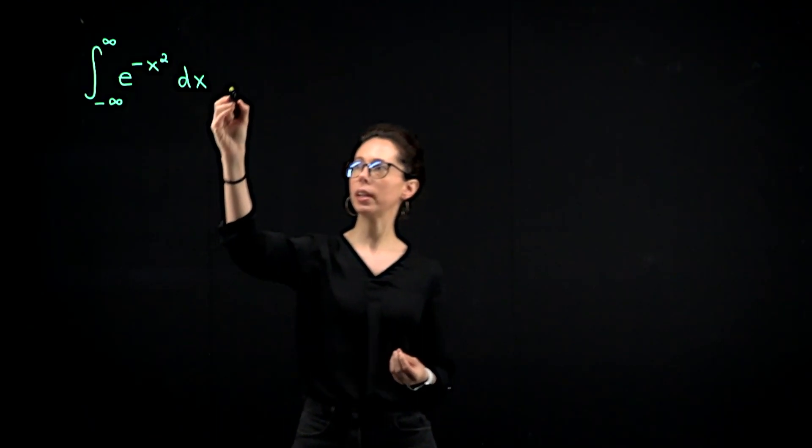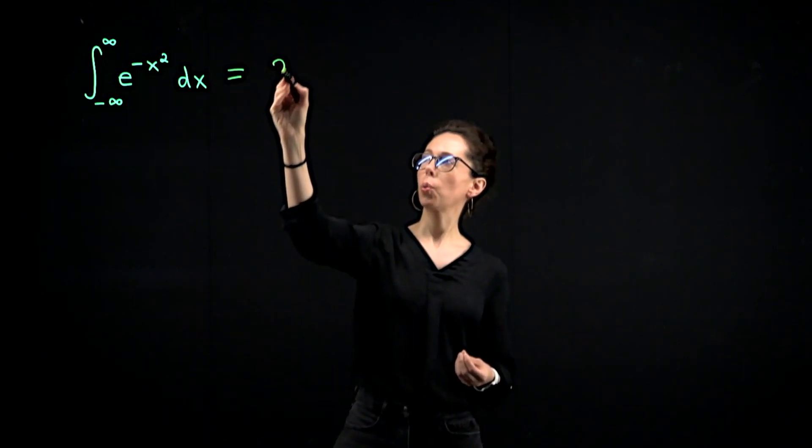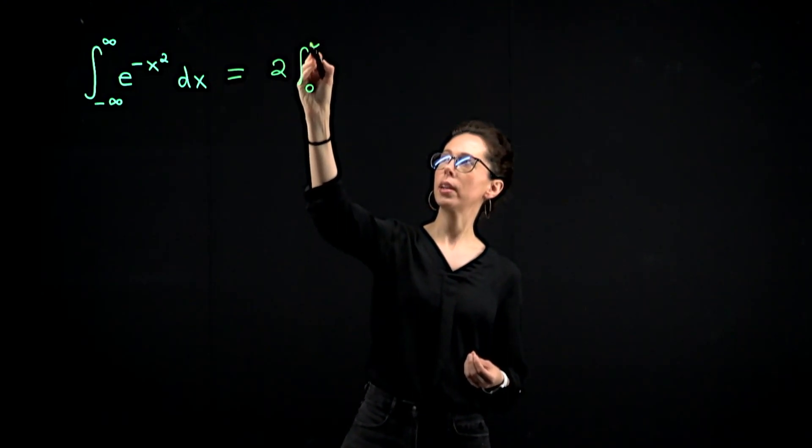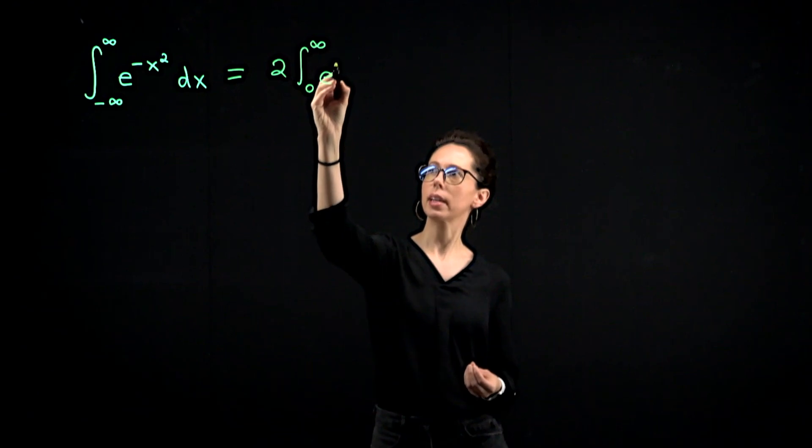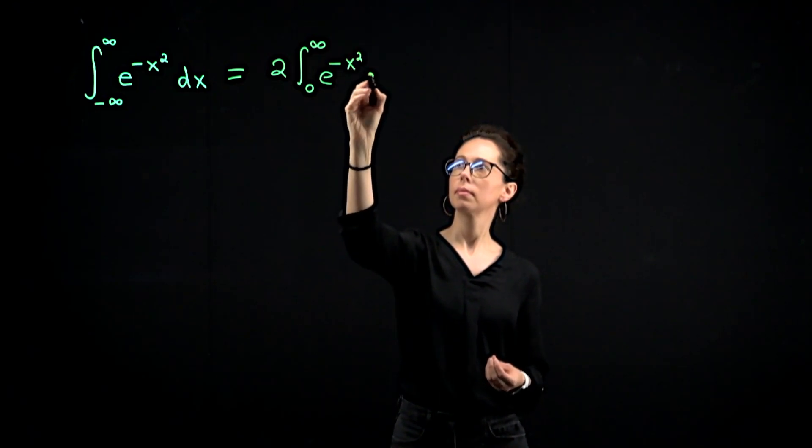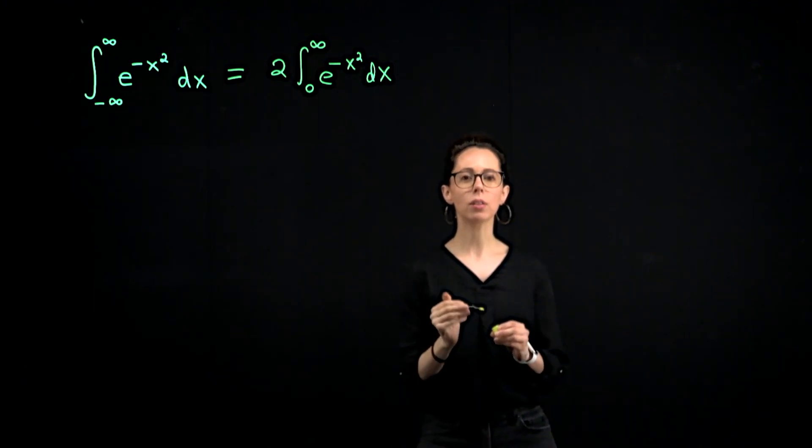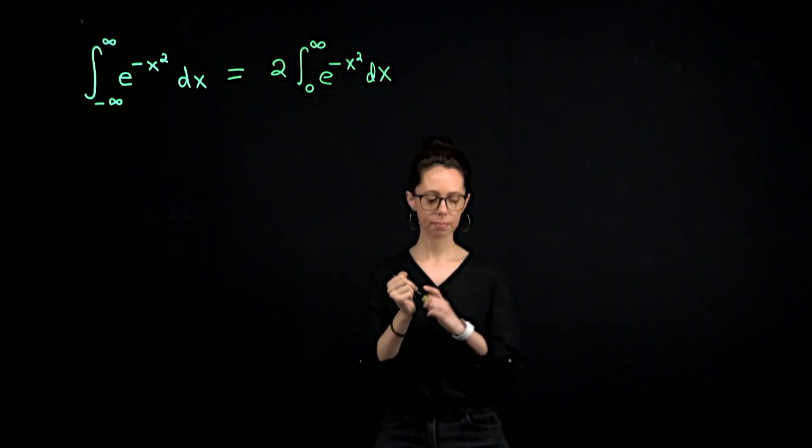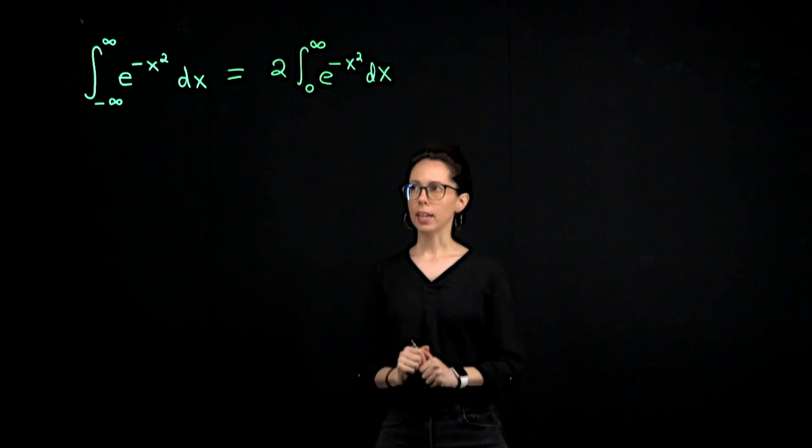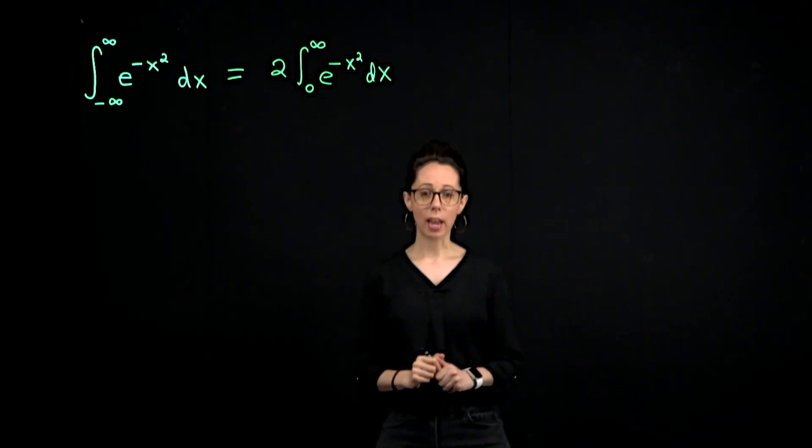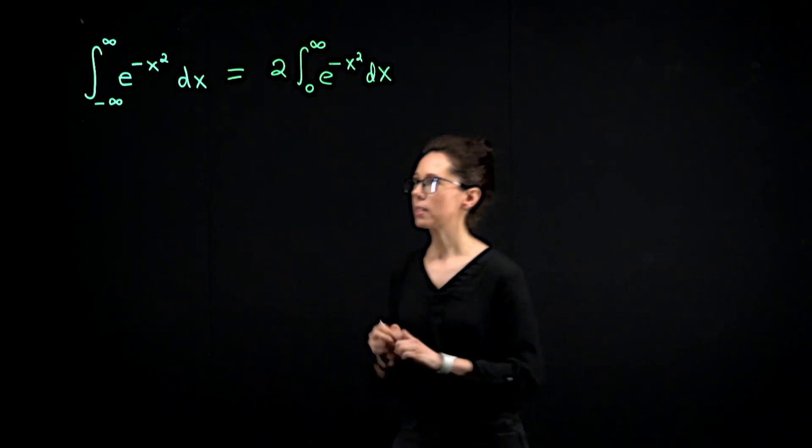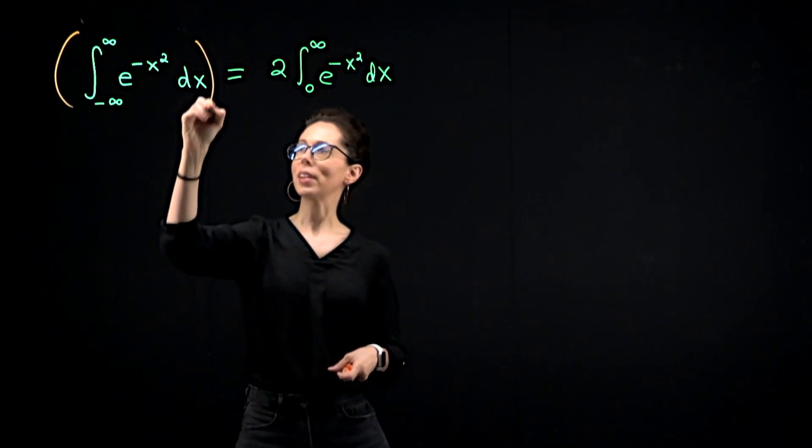integral from negative infinity to infinity can be thought of as twice the integral from zero to infinity of e to the negative x squared dx. I just like having a fixed lower bound rather than two infinite bounds. The next thing I'm going to do is square both sides. So let's square the left hand side.